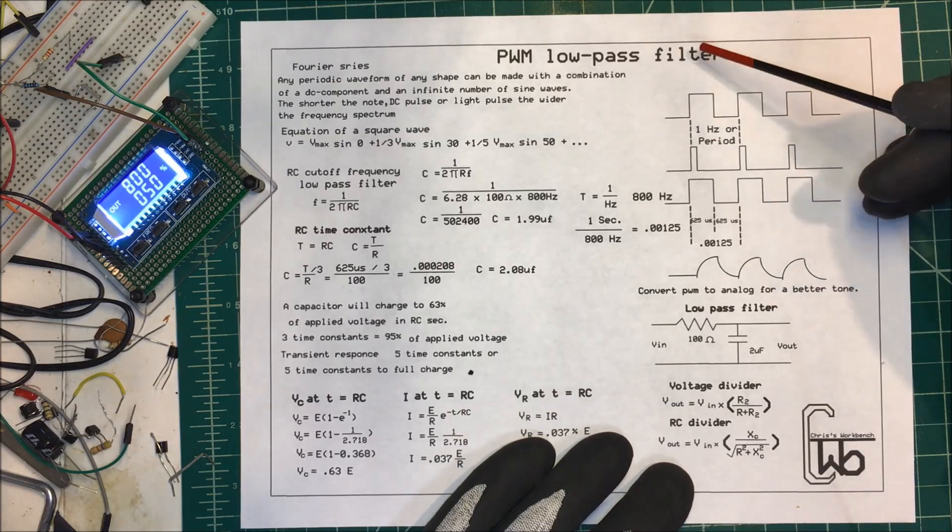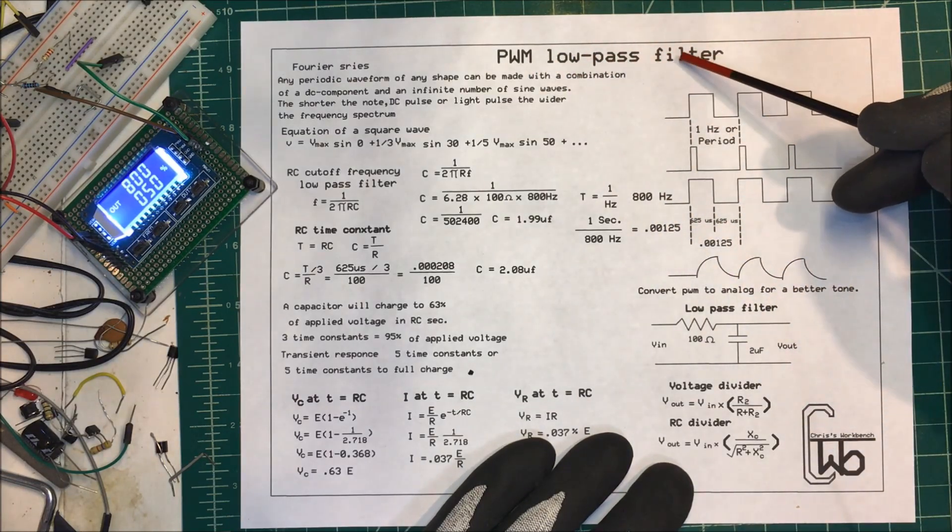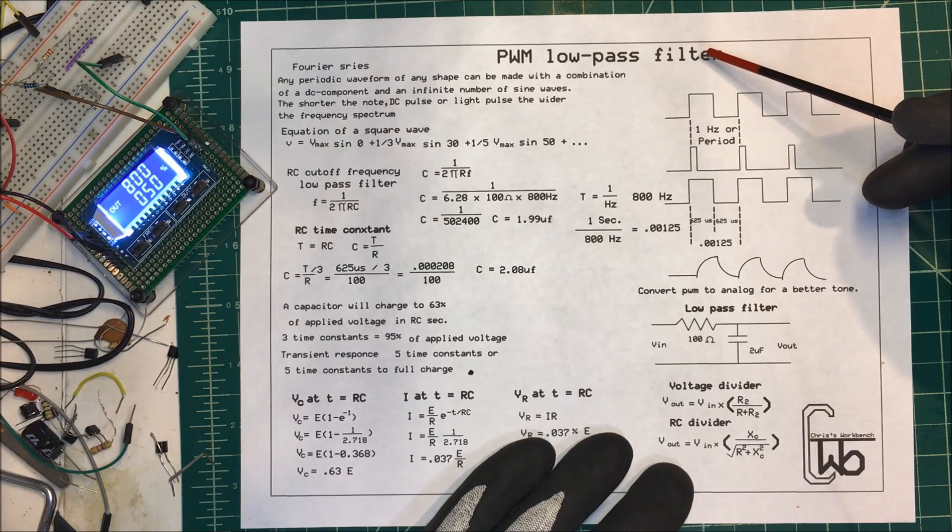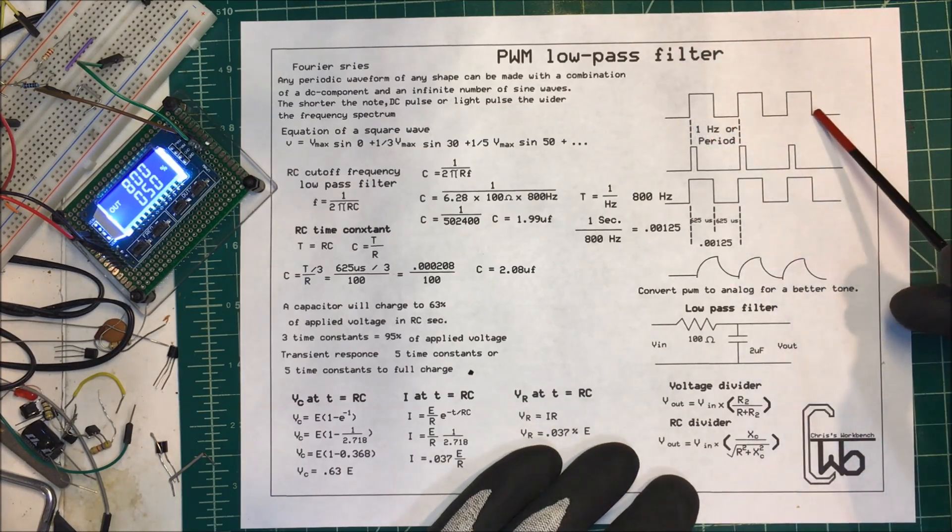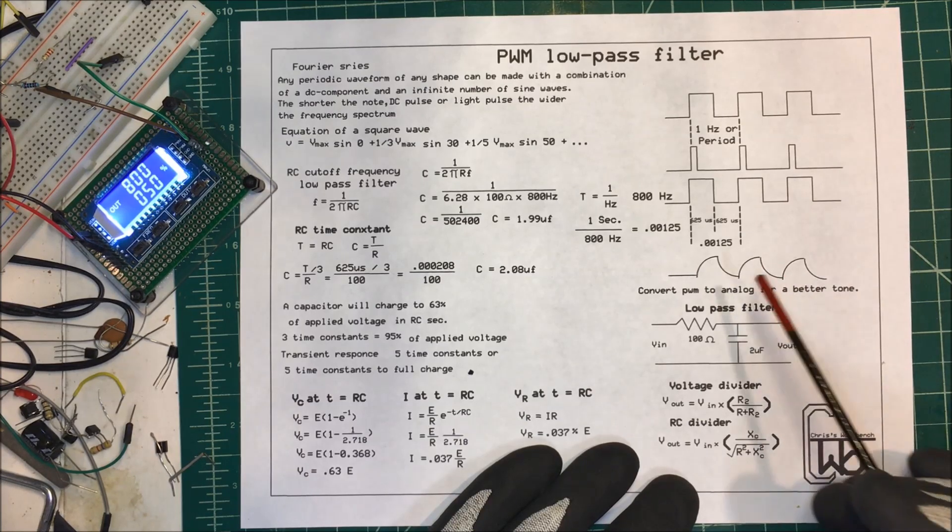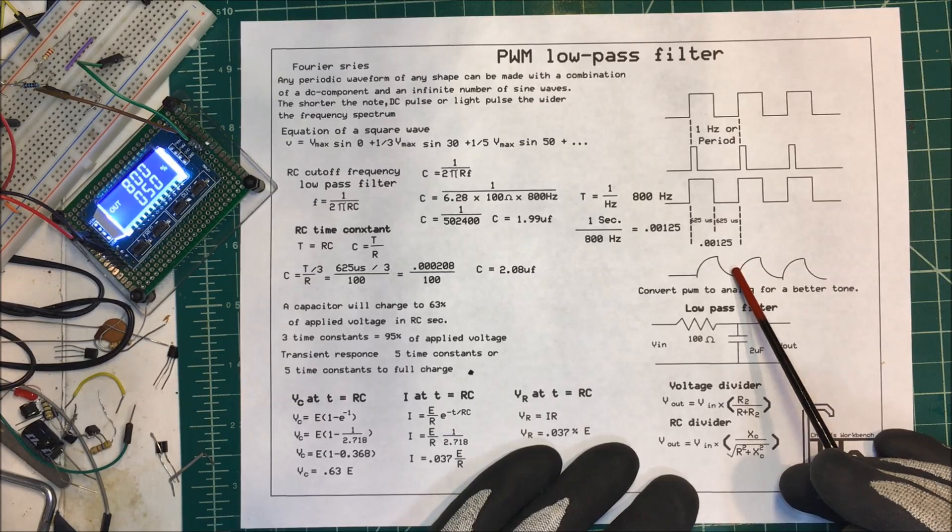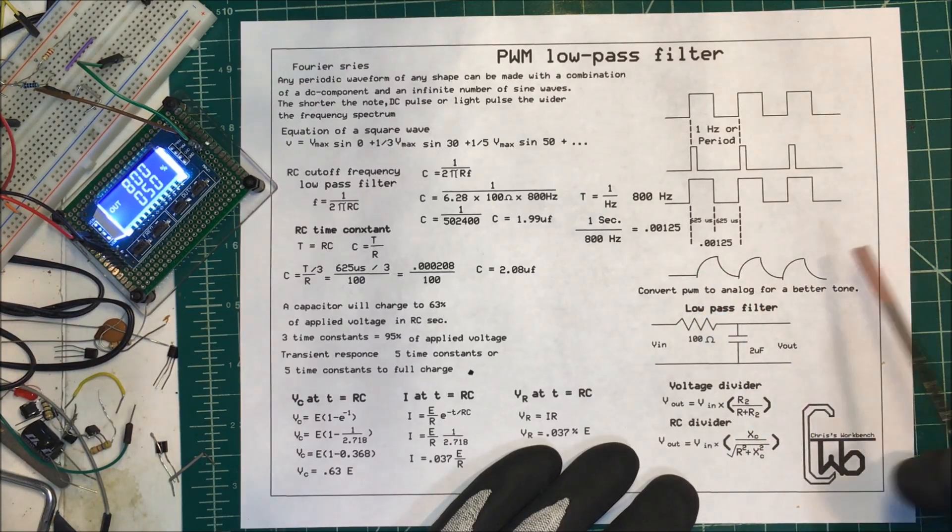Let's talk about a PWM low-pass filter, pulse width modulation. Why do I want to put a low-pass filter on there? Well, I want to change this square wave into something that looks more like a sine wave, and I'm going to do that so that I get a better tone out of it.